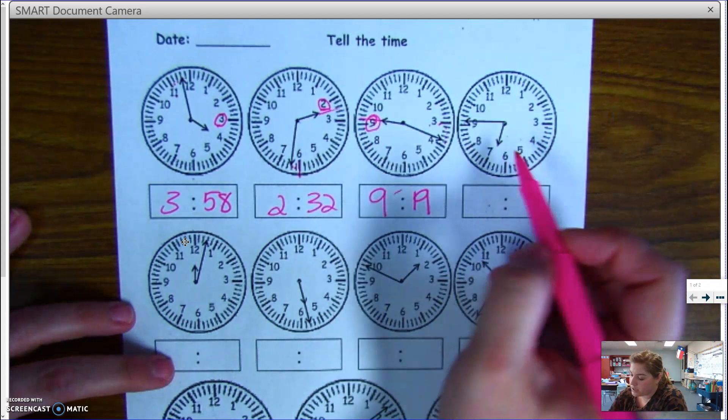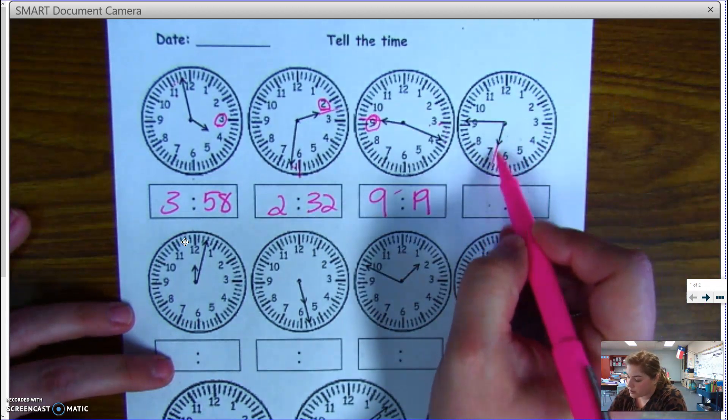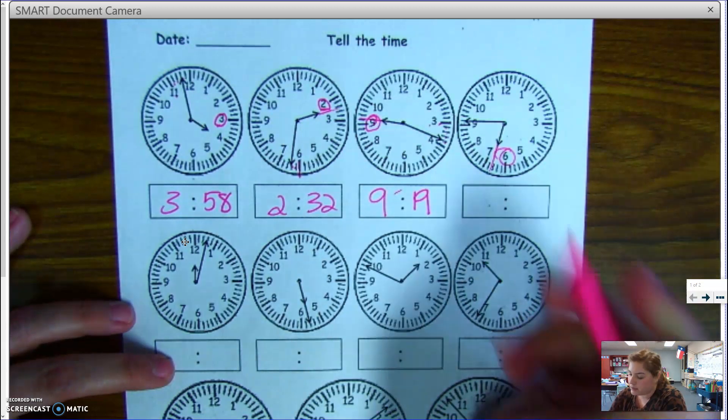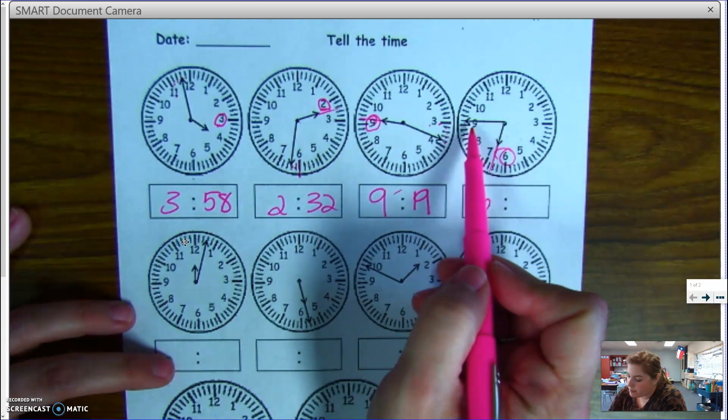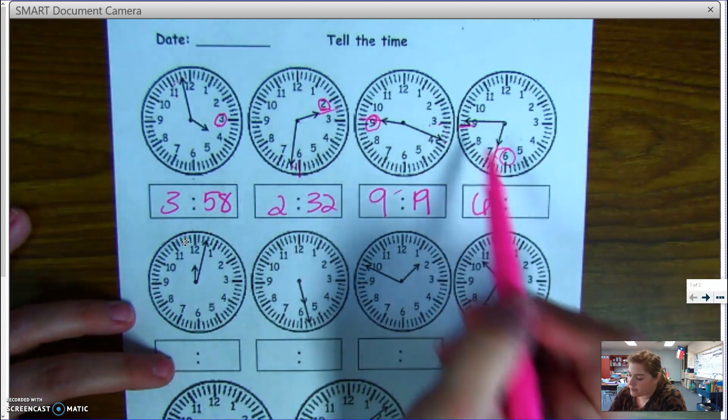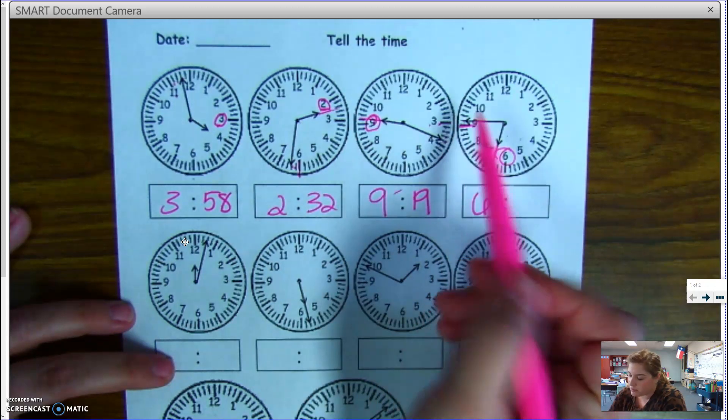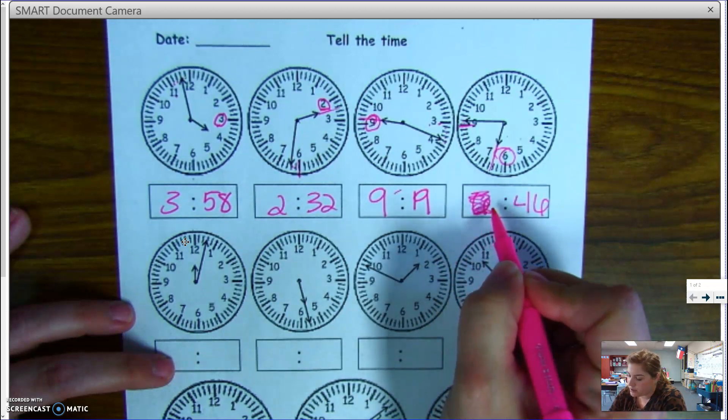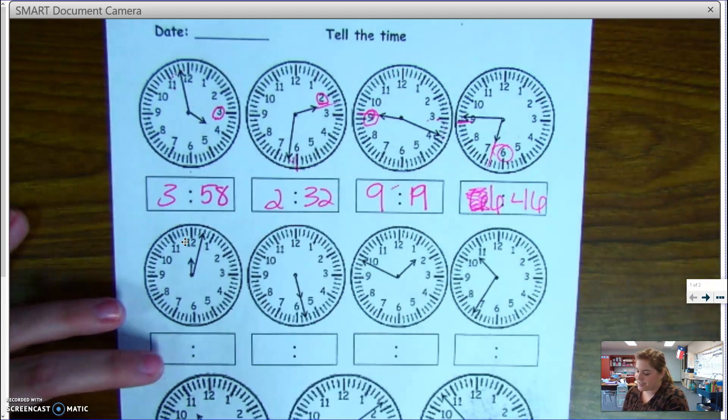And then this clock here, my hour is between six and seven. So my hour is still six. And my minute hand is one dash after nine, which is at forty-five. So this would be forty-six. Six forty-six.